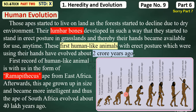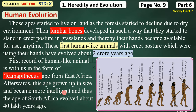Ramapithecus was also in the trees. It was a human-like animal, but the difference was that hair was reduced compared to others. The first record of human-like animals is Ramapithecus from East Africa. Afterwards, these apes grew up in size. Because they were bent and then erected, their height grew. They became more intelligent, and thus the ape of South Africa evolved about 40 lakh years ago.